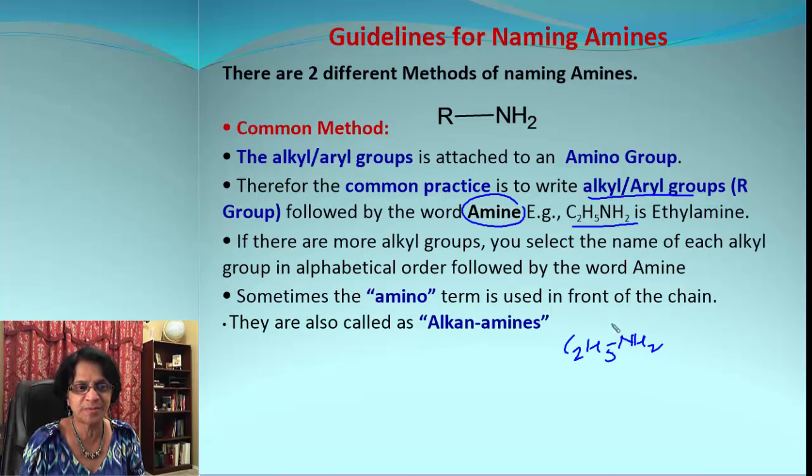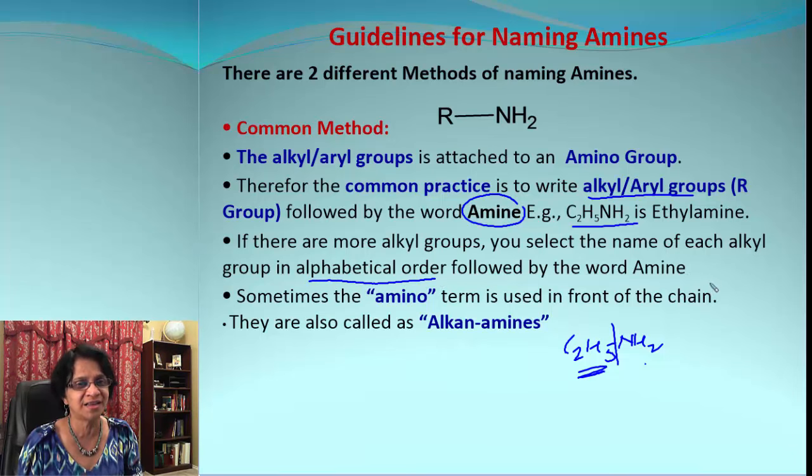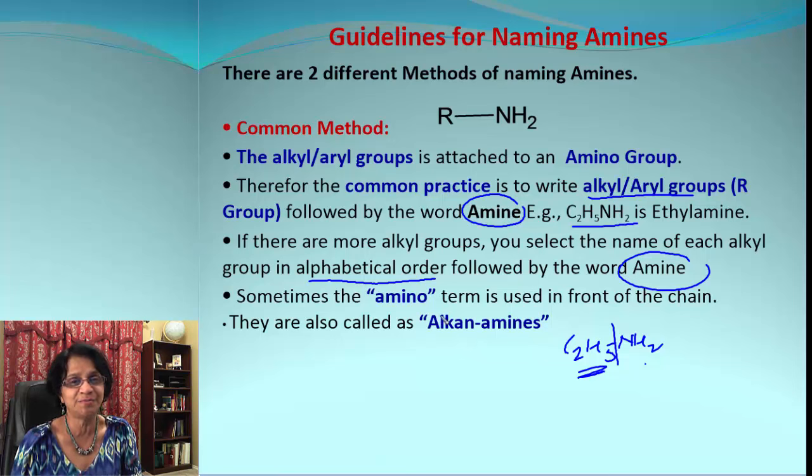For example, if you get C2H5NH2, we split that into two parts. We use the alkyl group and we put the word amine. If you have more than one alkyl group, you're going to use all those alkyl groups. Just make sure you arrange them in alphabetical order and at the end add the word amine.